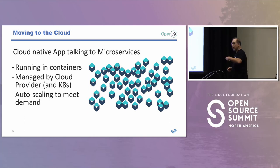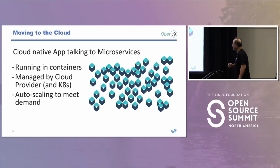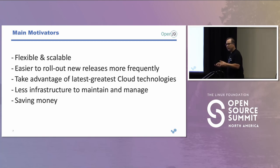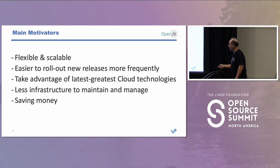Now we want to move our Java applications to microservices and cloud-native architectures. We're running in containers managed by platforms like Kubernetes, and we need to scale to meet demand. The motivators are flexibility, scalability, easier independent releases with microservices, and taking advantage of cloud innovations — all while saving money on infrastructure. That's the theory.